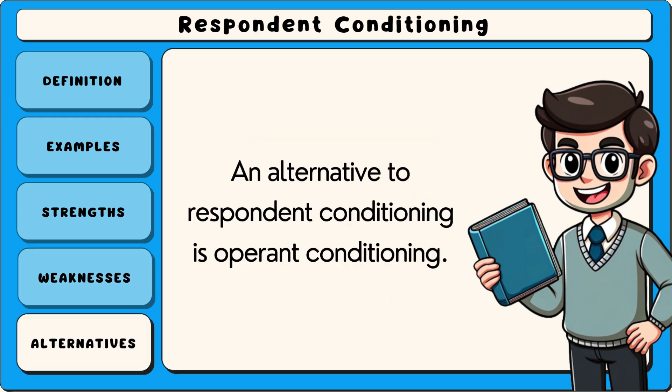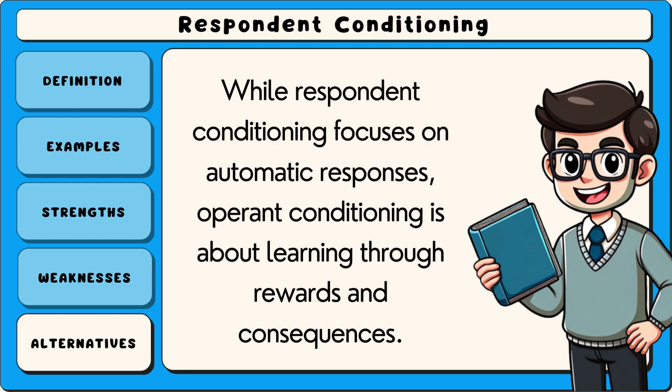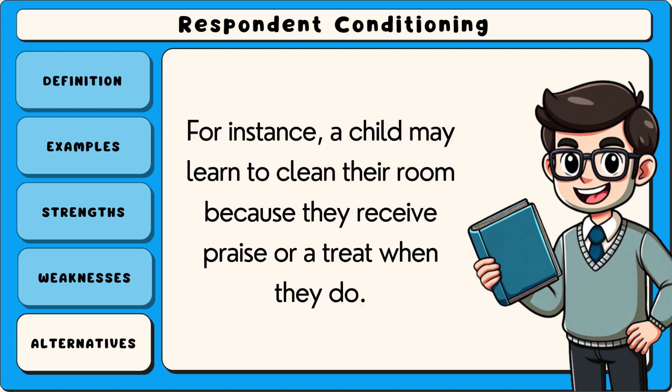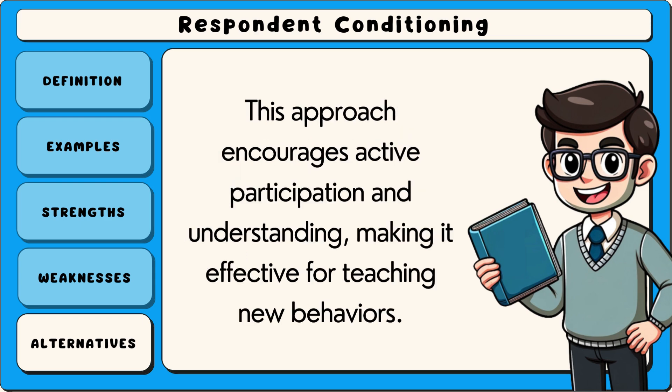An alternative to respondent conditioning is operant conditioning. While respondent conditioning focuses on automatic responses, operant conditioning is about learning through rewards and consequences. For instance, a child may learn to clean their room because they receive praise or a treat when they do. This approach encourages active participation and understanding, making it effective for teaching new behaviours.